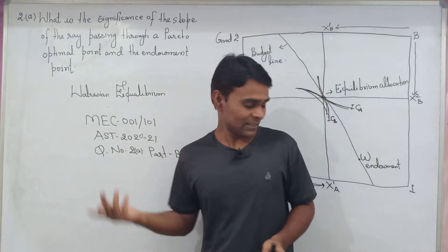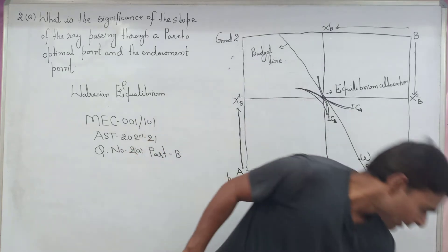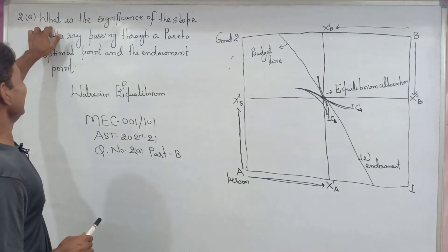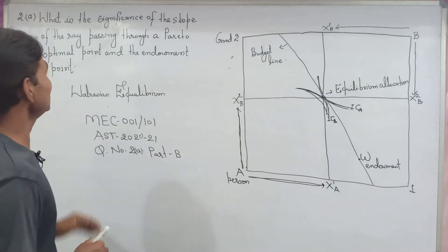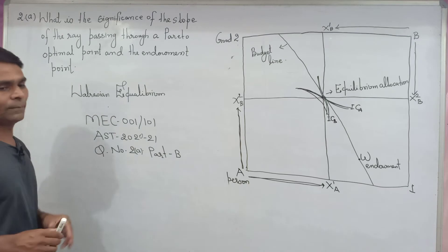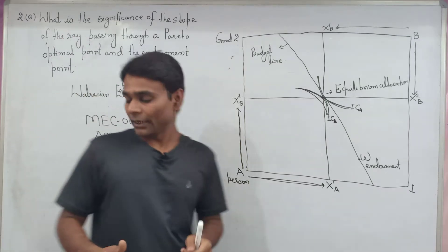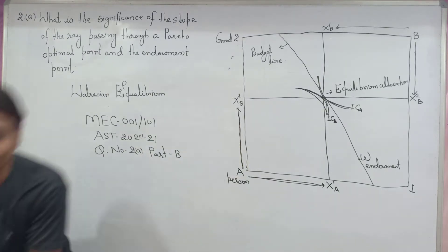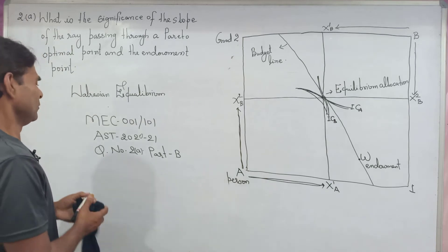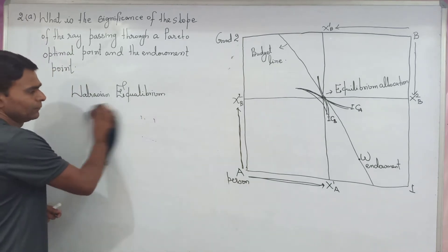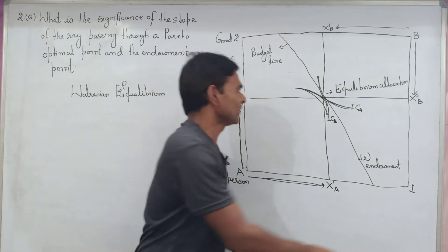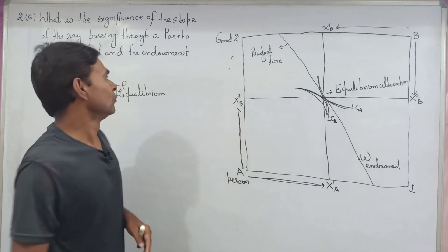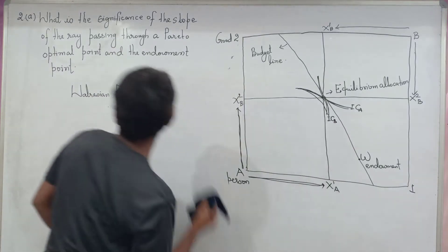Now let us start discussion of this question. The first question is telling us: what is the significance of the slope of the ray passing through the Pareto-Optimal Point and the Endowment Point? The Pareto-Optimal Point is where two persons' indifference curves are tangent to each other — that is the equilibrium point.